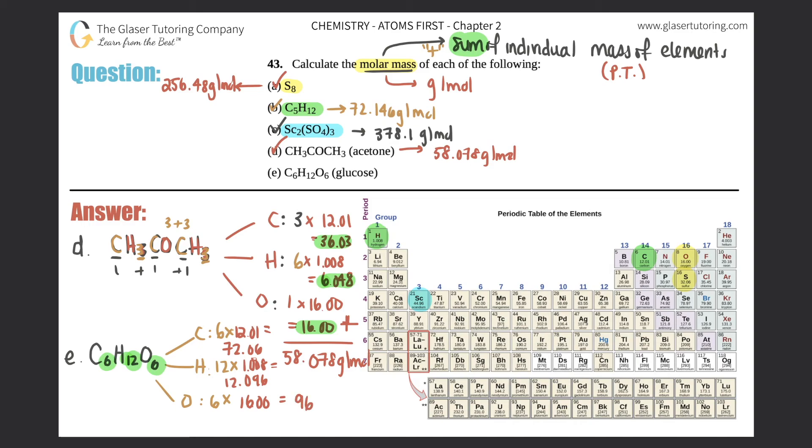We got all the parts. What do we do when we get the parts? We sum them up. So this plus this plus this, it's all the sum. So you add them all up and then you solve. So 72.06 plus 12.096 plus 96 is 180.156 grams per mole. And that's the answer to this one. Box that answer off, that is the answer.